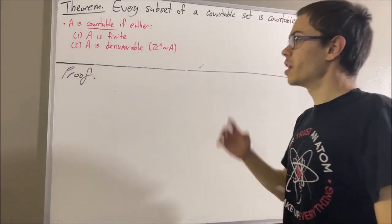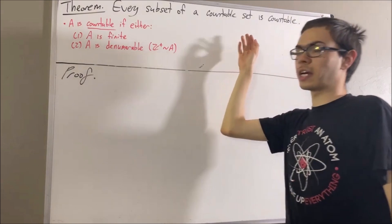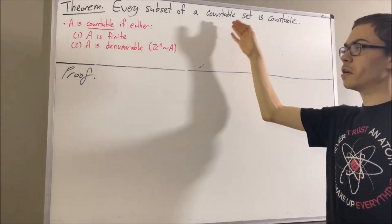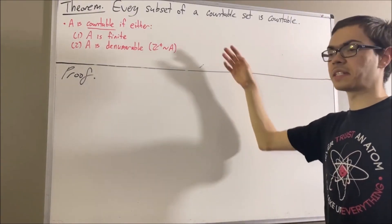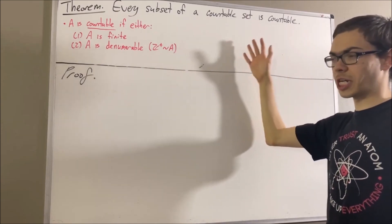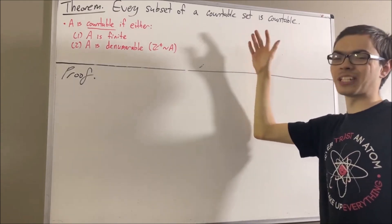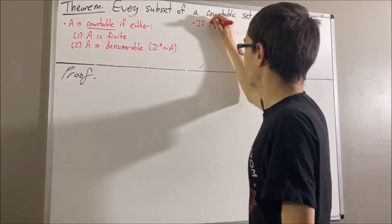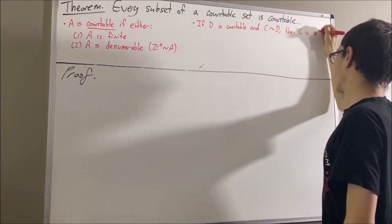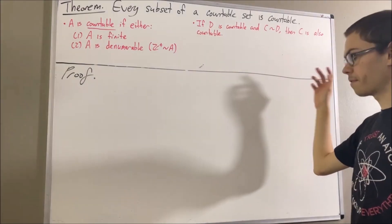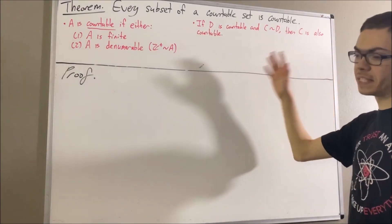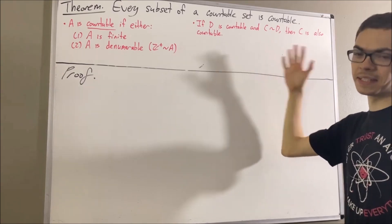In proving this theorem, we are going to rely on two facts regarding countable sets. The first is: given any two sets C and D, if D is countable and there's a bijection from C to D, then C is also countable. The second fact is: given any set C, if C is a subset of the positive integers, then C is countable.